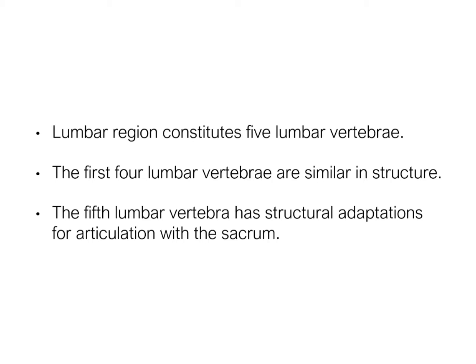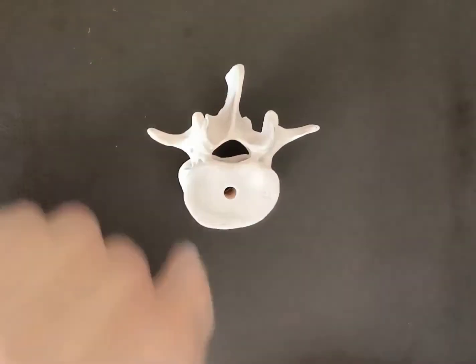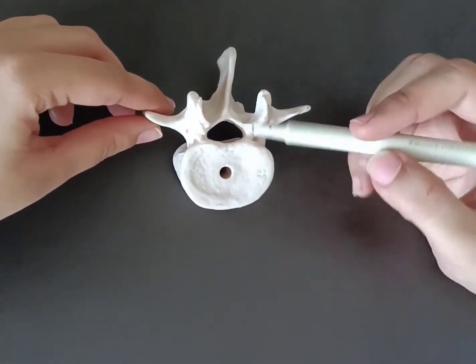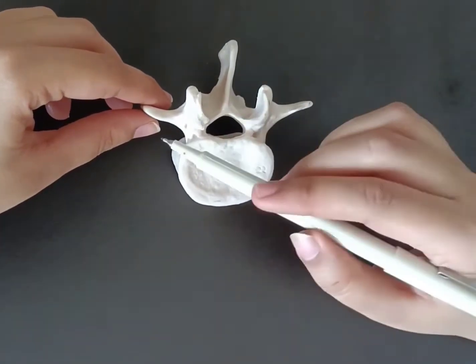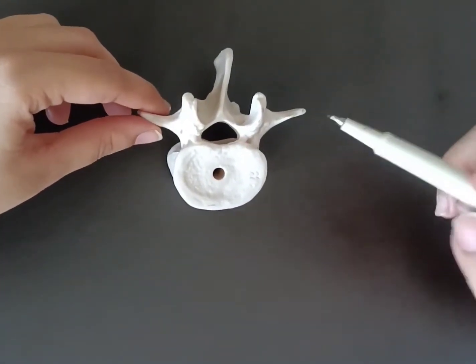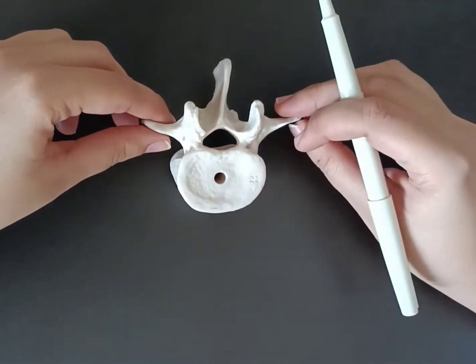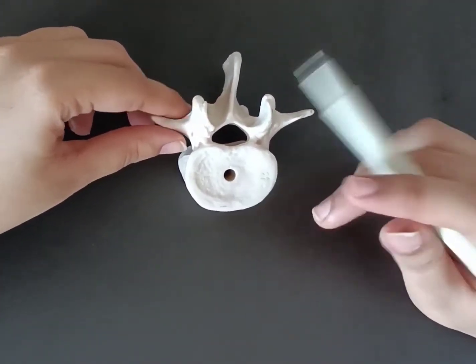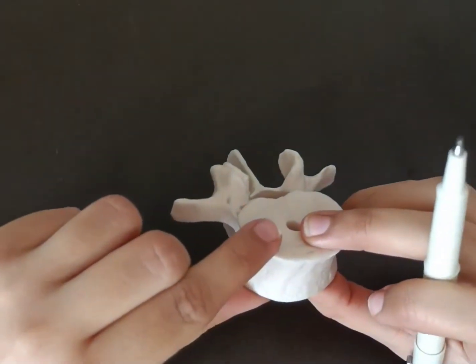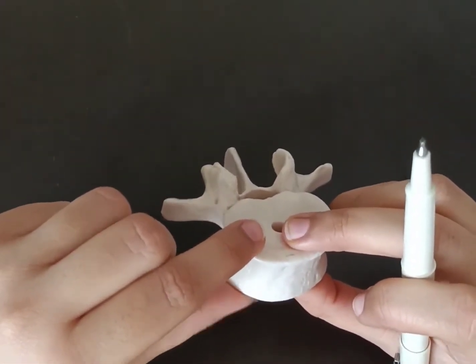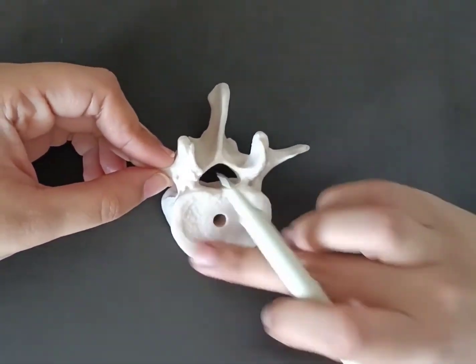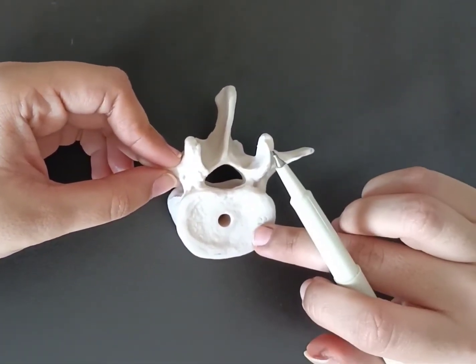Let us now see the structure of a typical lumbar vertebra. A typical vertebra has 2 major parts: the anterior vertebral body and the posterior neural or vertebral arch. A typical lumbar vertebral body is massive. The transverse diameter is more as compared to the AP diameter, and it is also greater in height compared to the vertebral body of other regions of the spine. The vertebral body is the weight-bearing structure of the spinal column.